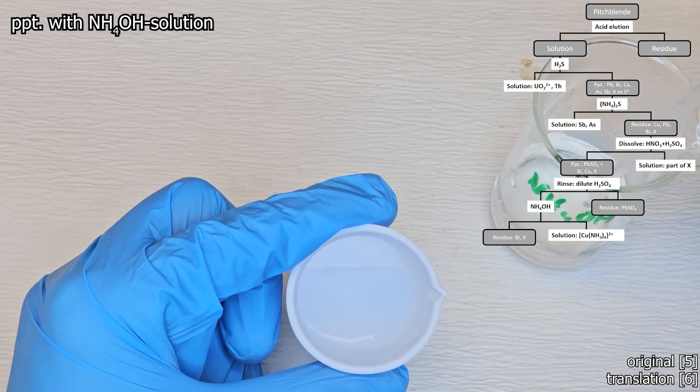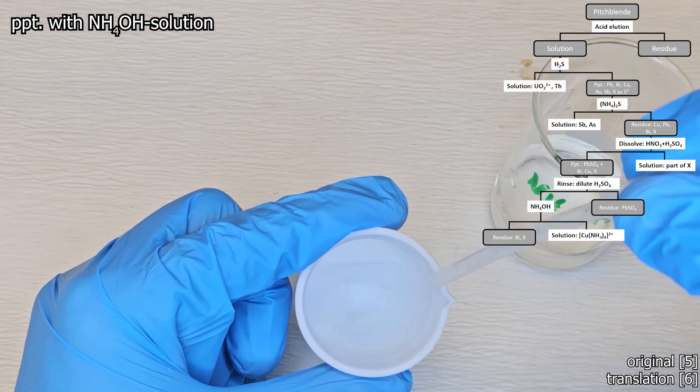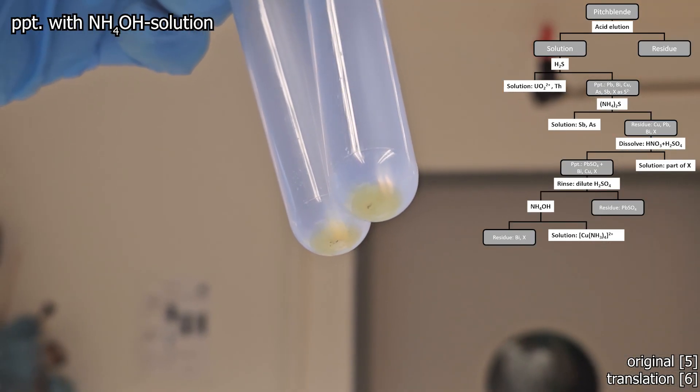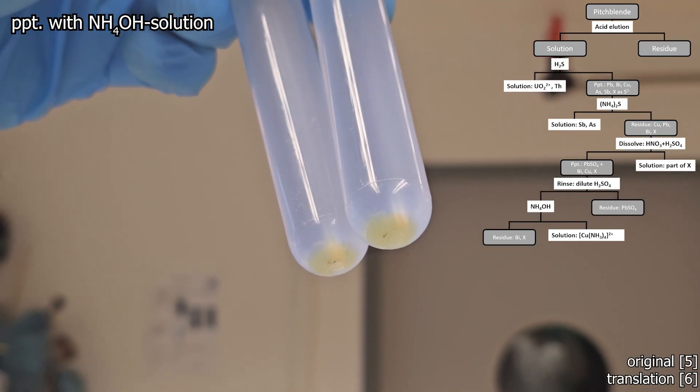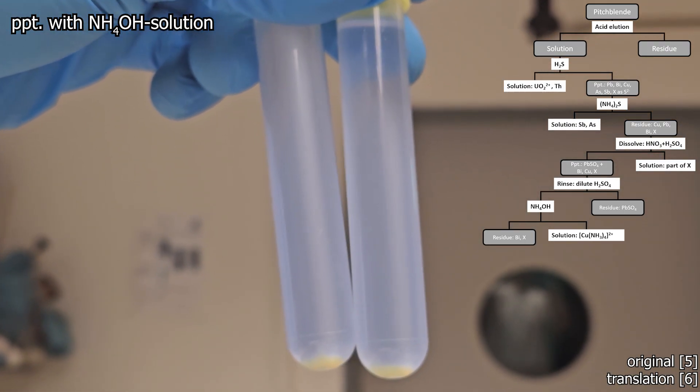Here you can see the beautiful formation of the deep blue tetraammine copper complex which is also a great indicator for us when this solution is alkaline. The whole thing is then centrifuged and at the top we have the tetraammine copper solution and at the bottom we have a yellow residue.